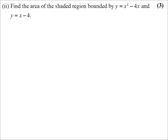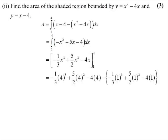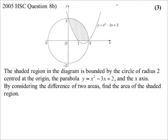Now find the area of the shaded region. It'll be the line minus the parabola, integrated from one to four. Tidying up gives minus x squared plus 5x minus 4. Add one to the power, divide by the power, and the answer is nine on two square units.